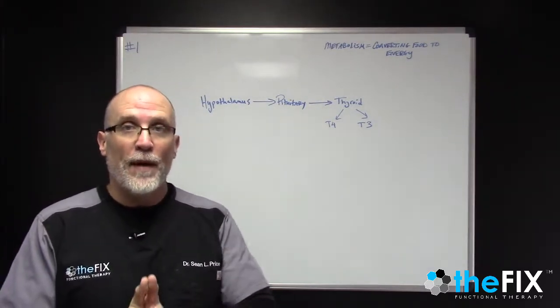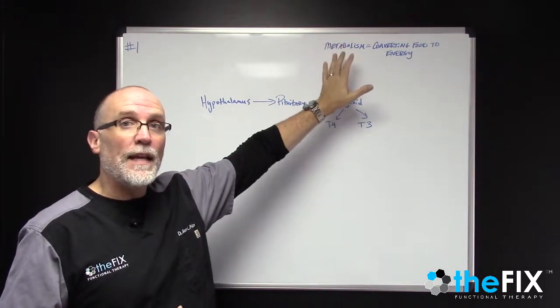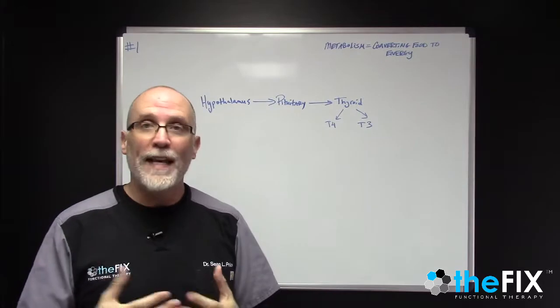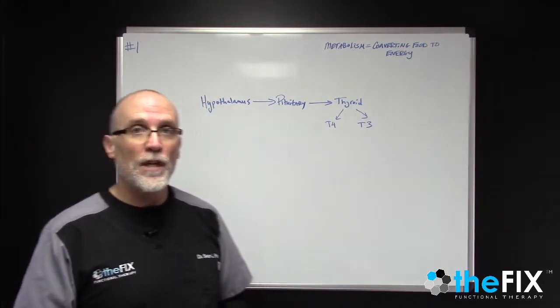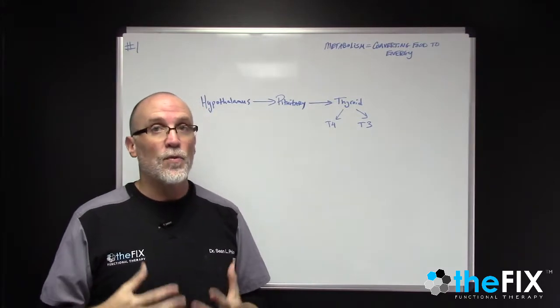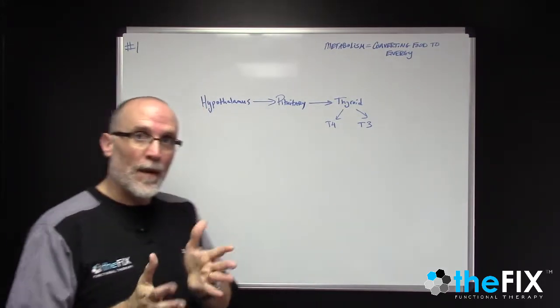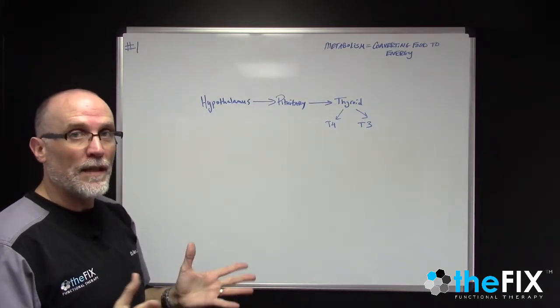So the first thing we need to talk about is what is metabolism, and metabolism is basically taking food and converting food into energy. Everybody knows or at least everybody assumes that the thyroid gland is critical to that metabolic pathway and this is true. So the metabolic pathway for the thyroid gland basically goes like this.